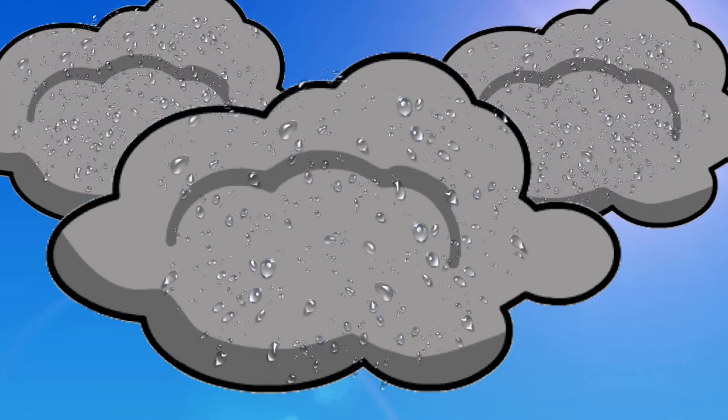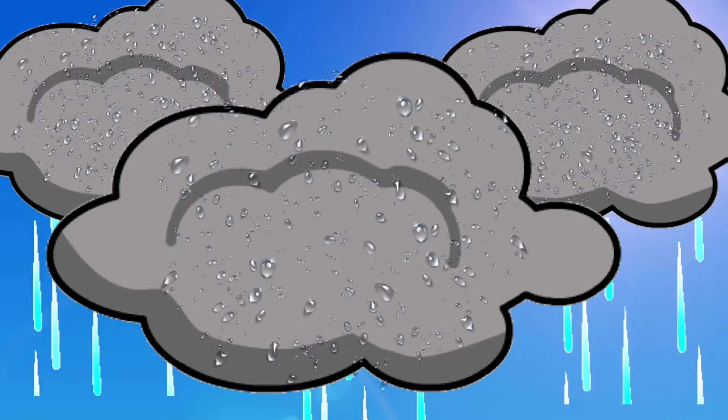Soon, the droplets in the clouds will get too big and fall from the clouds as rain. That's why we know when clouds are grey, it's going to rain soon.